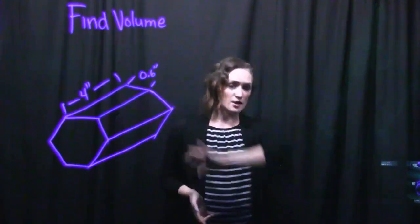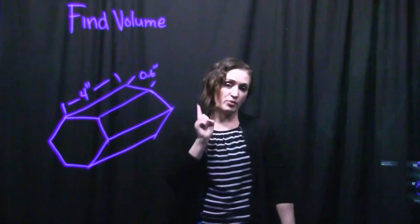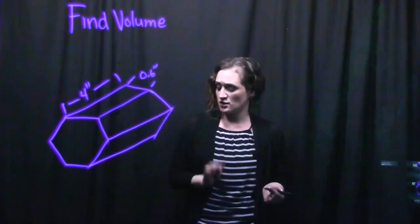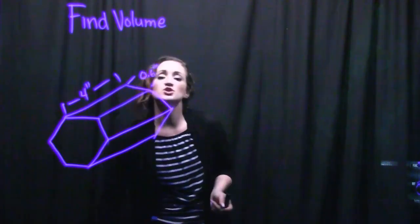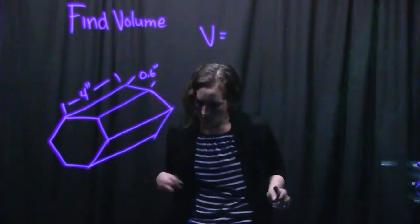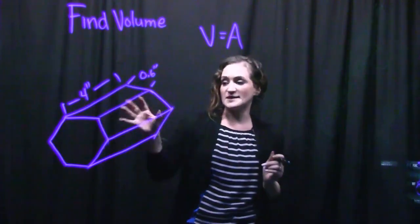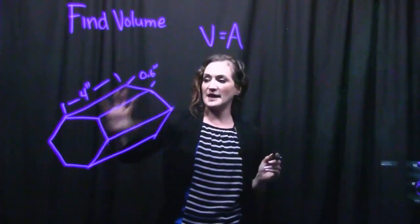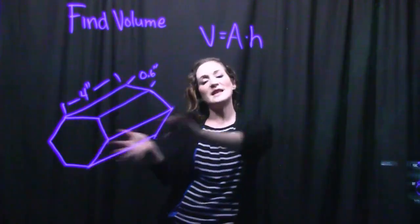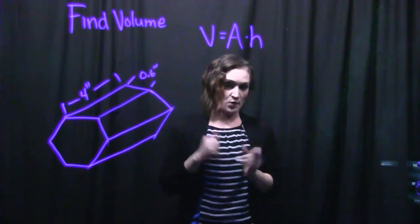When it comes to finding the volume of different shapes in general, we need to make sure we are pulling the correct formula and that we have all the pieces needed to plug into it. Our formula is: volume equals the area of the face — for us, that's a hexagon — times the height, or the length here since this shape is sitting on its side. This is the formula we need.